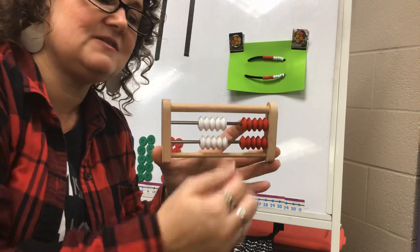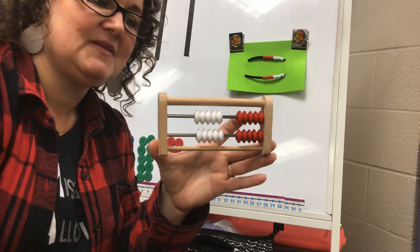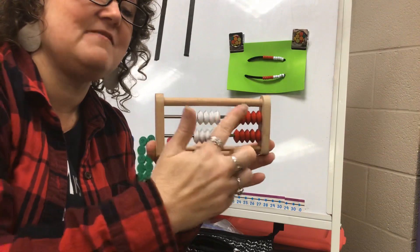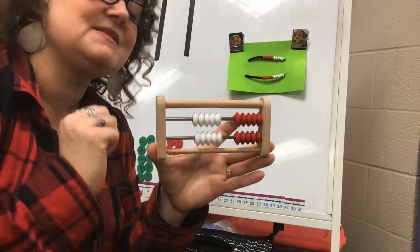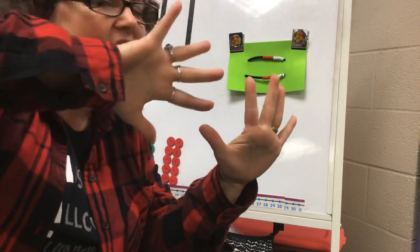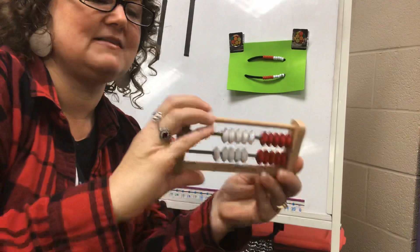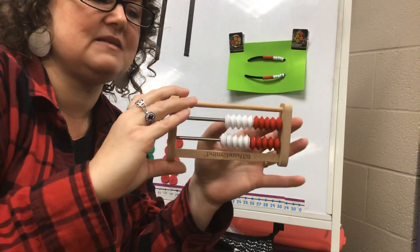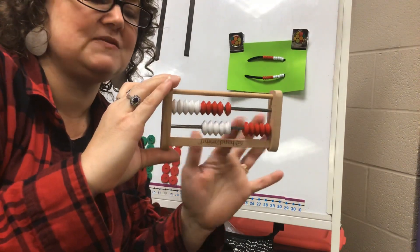Did you notice that there's five of the white and five of the red on the top and on the bottom? And if you notice that there's five and five, then you might also remember that you also walk around with five and five all of the time on your hands.